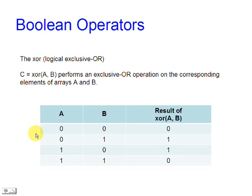Function XOR performs an exclusive OR operation on the corresponding elements of arrays A and B. The result is true only if either A or B are true.